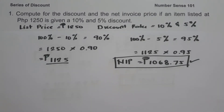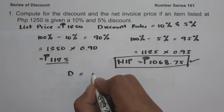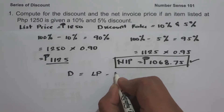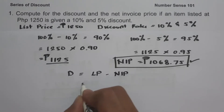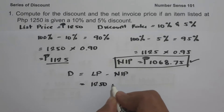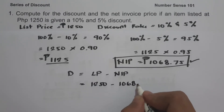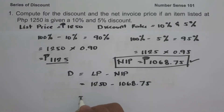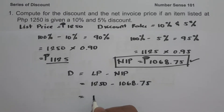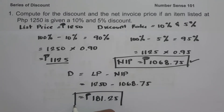To determine the discount using this second method, we use the formula: discount equals list price minus NIP. So we have 1,250 minus 1,068.75, which gives us 181.25 pesos, and this will be our discount.